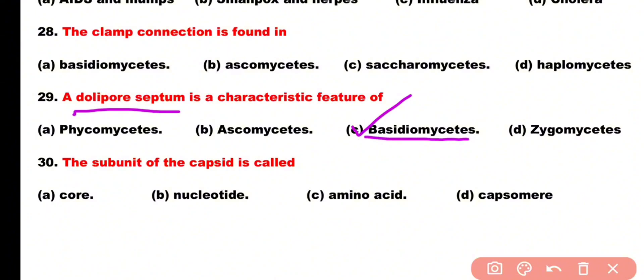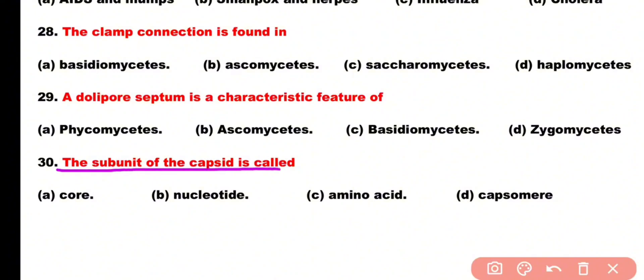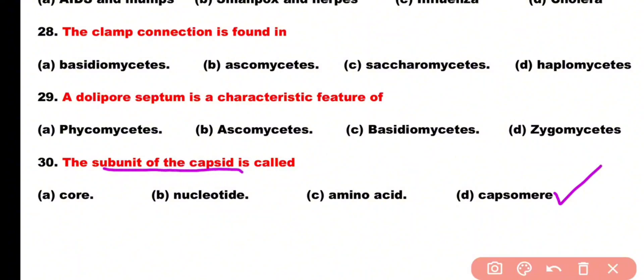Question number 30: The subunit of the capsid of a virus is called: core, nucleotide, amino acid, or capsomere. Correct answer is option D. Capsomeres are the subunits of the capsid of a virus.